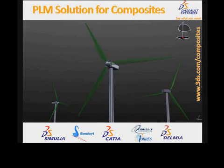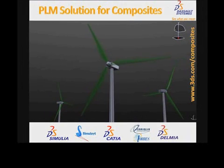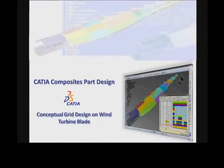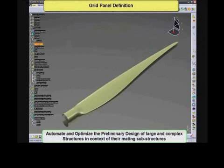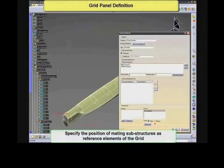Most wind turbine blade failures are due to poor design and manufacturing practices that could be eliminated by adopting aerospace industry best processes for composites design and manufacturing. Utilizing a proven PLM solution, such as CATIA Composites, will help manufacturers build more durable wind turbine blades and keep pace with growing demand.